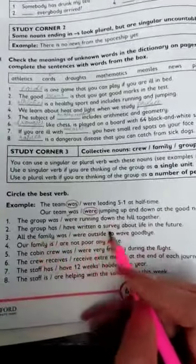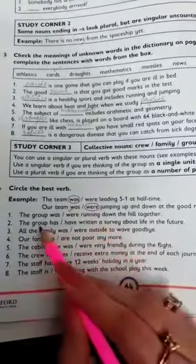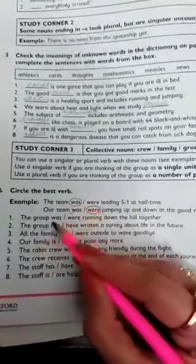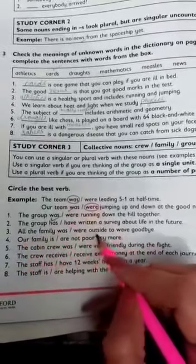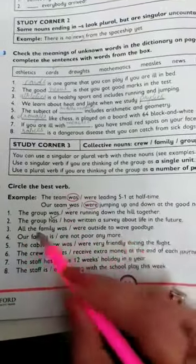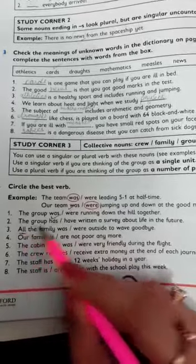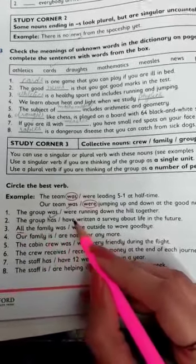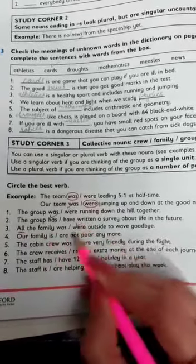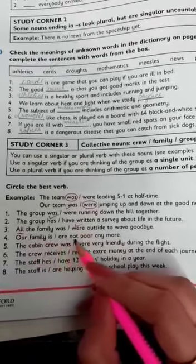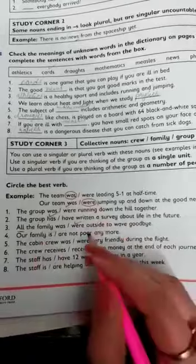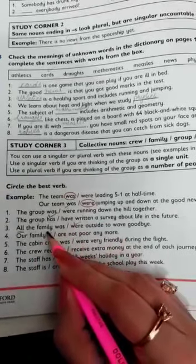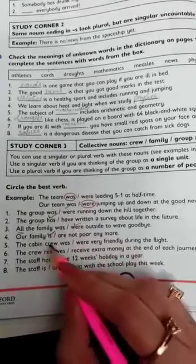All the family blank outside to wave goodbye. Here we are talking about all of the members, so 'were.' Our family is not poor anymore. Here we are talking about one unit, one family, so 'is' is the correct one. Is the cabin crew blank very friendly during the flight? They are talking about all of the cabin crew, so 'were.'